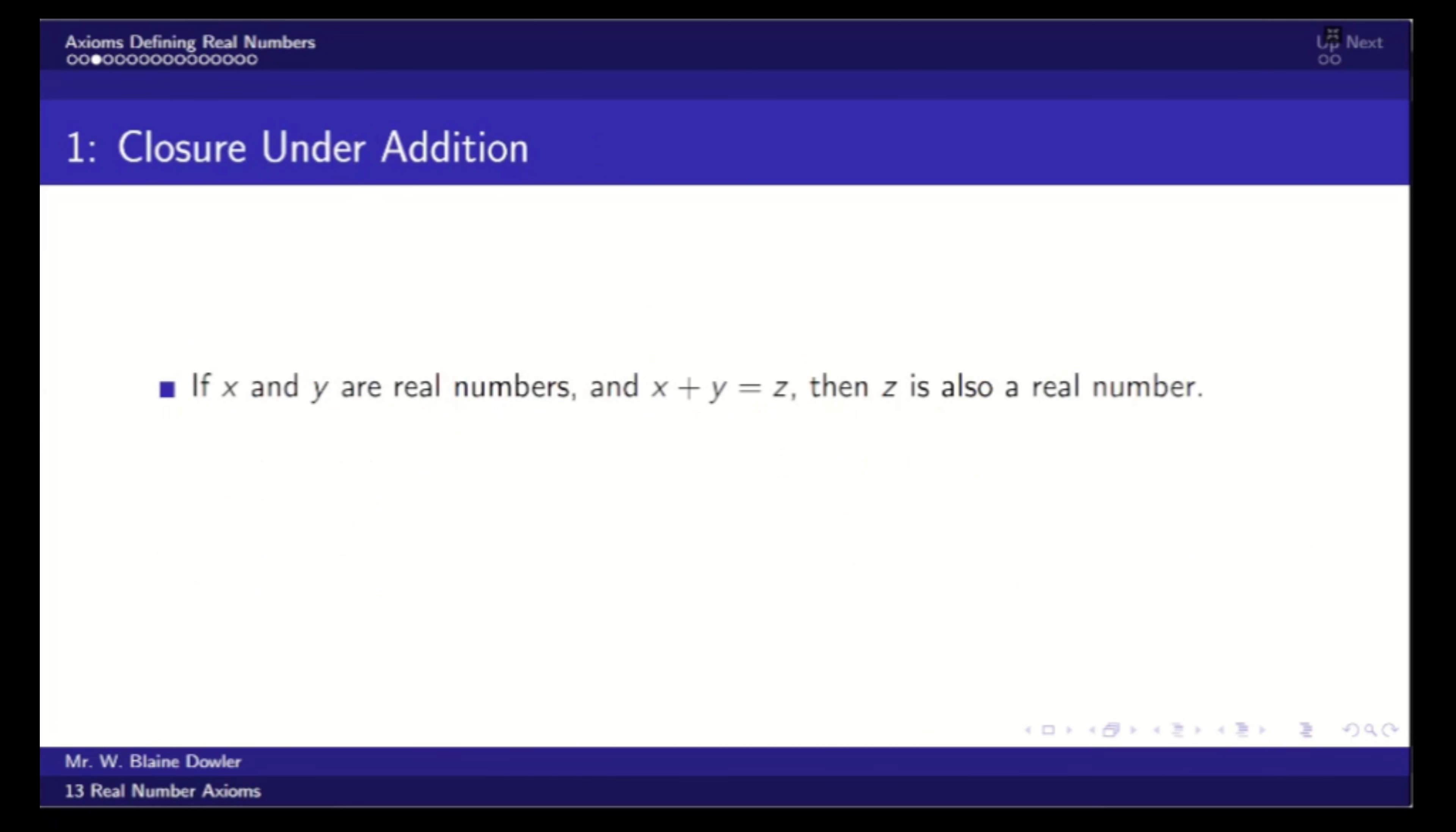So the first of our axioms is called closure under addition. If x and y are real numbers, and x plus y equals z, then z must also be a real number. The biggest surprise here is that we bothered to make this an axiom. We do that because if x plus y equals elephant, you just give up and go home. We have to make sure that addition makes sense.